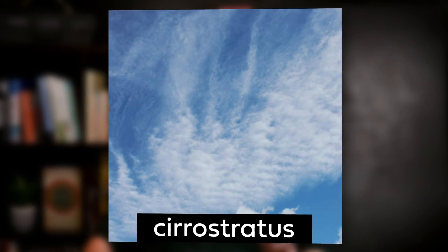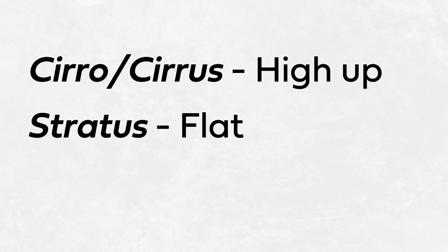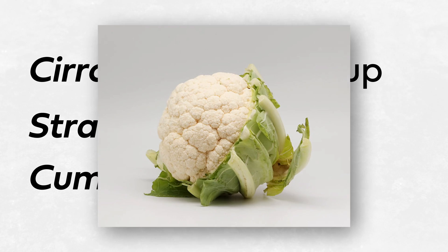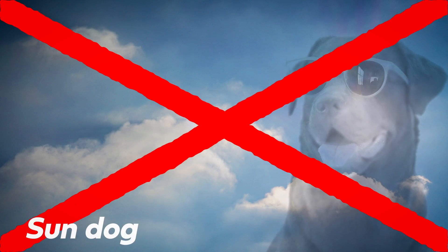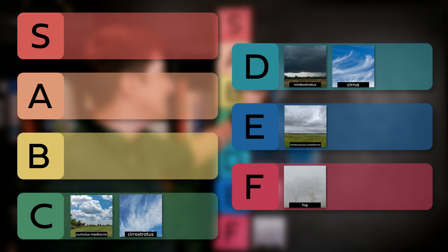Next up are the slightly more interesting cirrostratus clouds. There are some repeated names here from Howard's system: cirro or cirrus refers to being high up, stratus refers to being flat, and cumulo refers to being fluffy like a cauliflower. So cirrostratus is a thin flat sheet of ice crystals, which should be pretty boring — but what brings it up to C tier is that it produces some really interesting optical phenomena, like halos and sundogs, caused by sunlight reflecting off the ice crystals. So that makes it more interesting — I'm happy to put this in C tier.